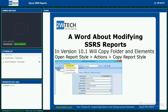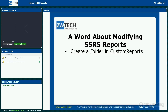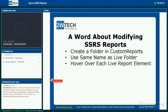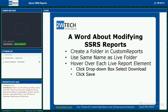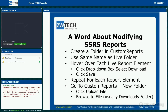With Epicor 10.1, in the report style you can click on options and copy the report style, which will bring over the folder and report elements into the custom reports folder for you. For earlier versions, you need to go into the SSRS reports server and create a folder in the custom reports using the same name as in the live folder. Then in the live folder, hover over each report element, click the drop-down box, select download and save. Upload each file to your new custom reports folder, browsing to find each file — usually found in the downloads folder by default.